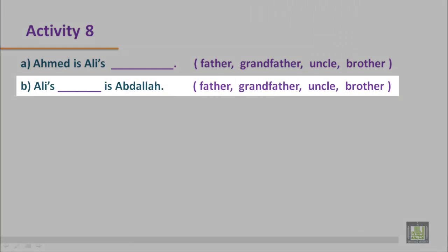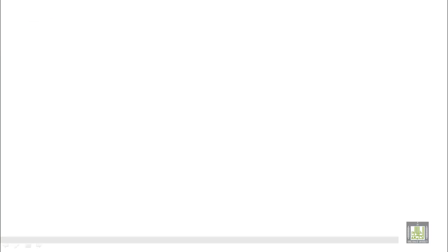Sentence number B: Ali's ___ is Abdullah. The relationship between Ali and Abdullah could be father, grandfather, uncle, or brother. Let's have a look at the family tree. Here is Abdullah and here is Ali. The family tree shows that the relationship between Ali and Abdullah is uncle.